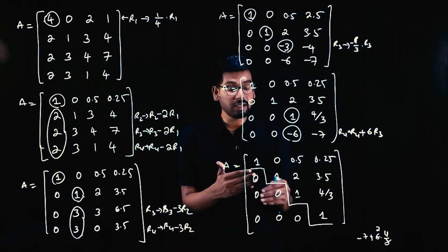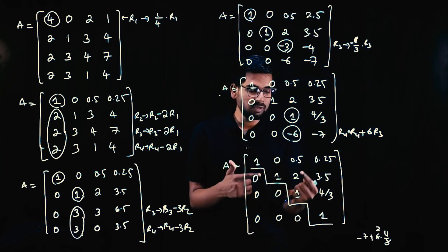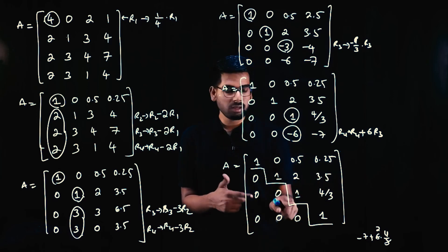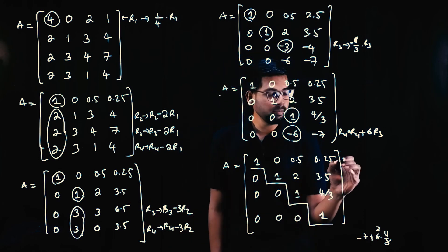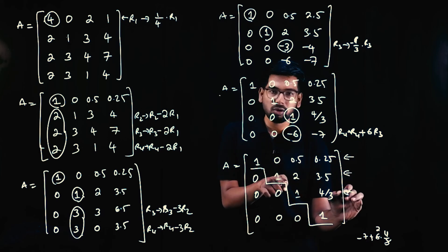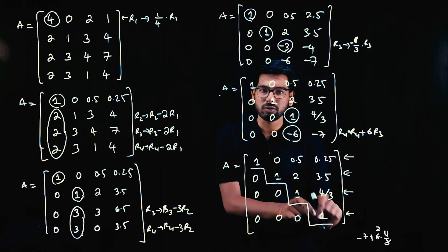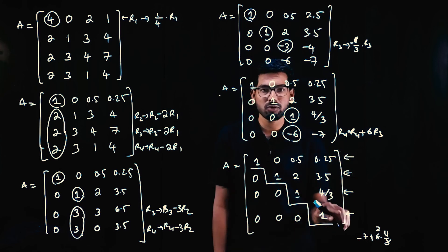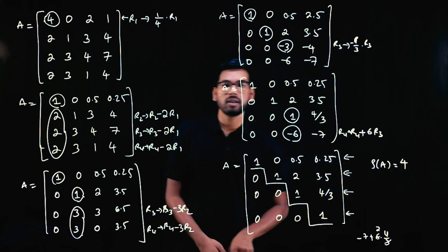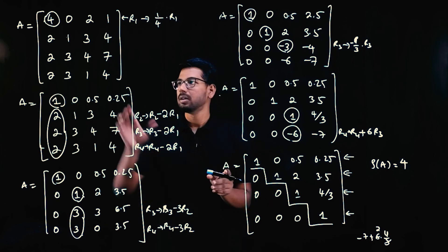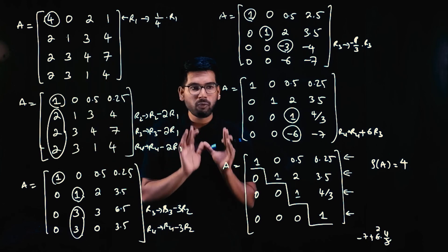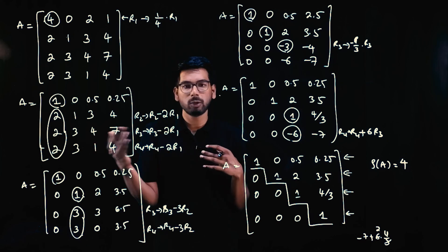After this we cannot make any more rows zero. Row 1 is non-zero, Row 2 is non-zero, Row 3 is non-zero, Row 4 is non-zero. There are no zero rows, so rank of A equals the number of non-zero rows: 1, 2, 3, 4 — the rank is 4. If you follow this procedure — make first pivot 1, zero below; second pivot 1, zero below; and so on — you will always find the rank no matter the matrix order.